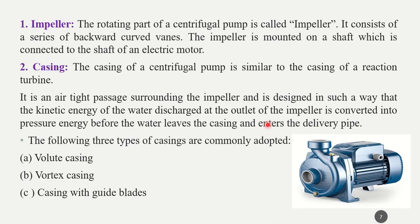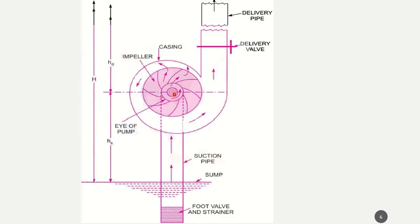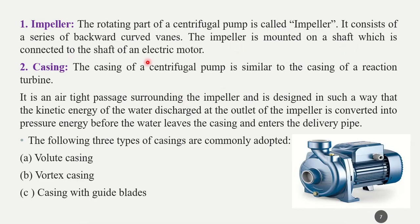Now for a detailed explanation: the impeller is the rotating part of the centrifugal pump. It consists of a series of backward curved vanes. In the diagram you can see the eye of the impeller at the center, with vanes fitted on the impeller that are curved backwards. This impeller is mounted on a shaft which is connected to the shaft of an electric motor — you can see the impeller part and the motor shaft in the diagram.